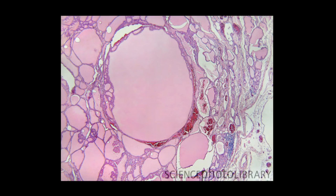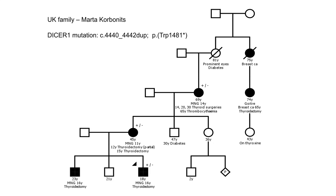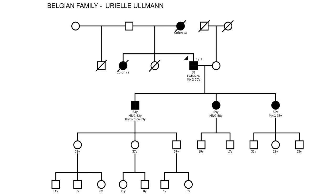An example family from Marta Korbonits in the UK shows what's striking — the age of onset is very young: 16, 16, 11, 14. The mutation is tracking in the family. This has a DISA mutation. Whereas a family from Belgium with similarly impressive goiter in three individuals is all old onset, and this family does not have a DISA mutation. The key point: MNG occurring in a familial setting in children — one should think of DISA.